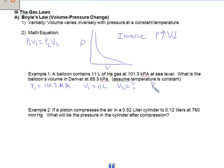And our P2, once we've reached Denver, is 85.3. We go ahead and plug these in. We have 101.3 times 11 equals 85.3 times V2.